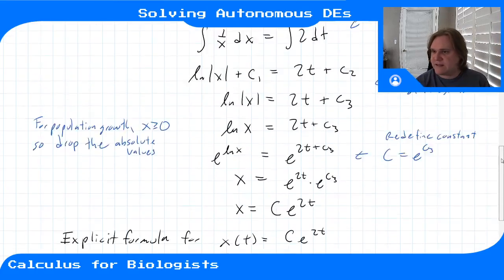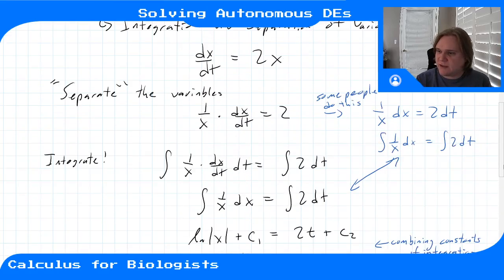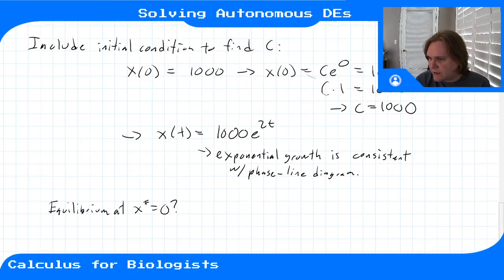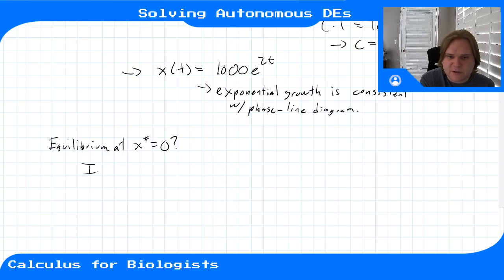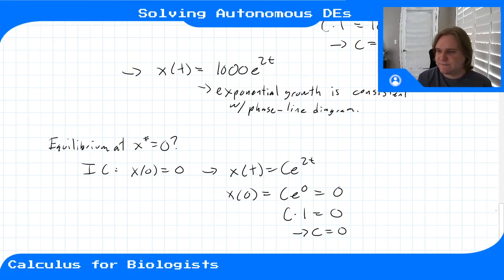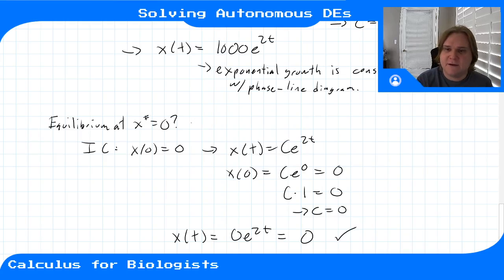In this phase line diagram, the only thing that doesn't grow is starting exactly at the equilibrium point at x = 0. Let's check that this makes sense in our solution. For the equilibrium at x* = 0, if we start there we should stay there for all time. Plugging in x(0) = 0: c·e^0 = 0, so c = 0. With c = 0, the function is 0·e^(2t), which is just zero for all time — confirming it is indeed an equilibrium point.